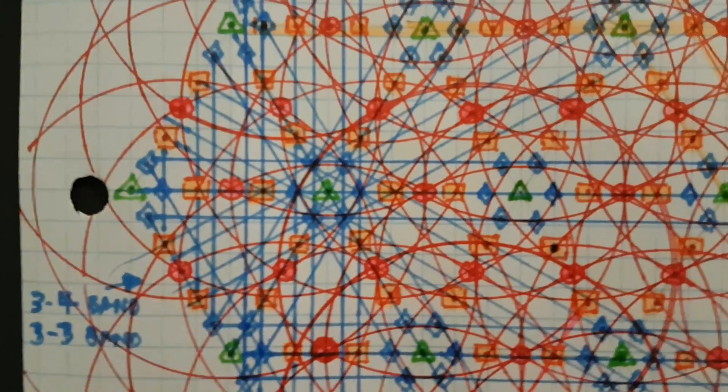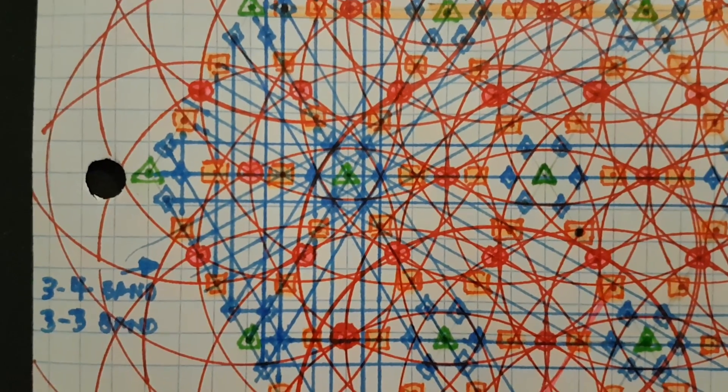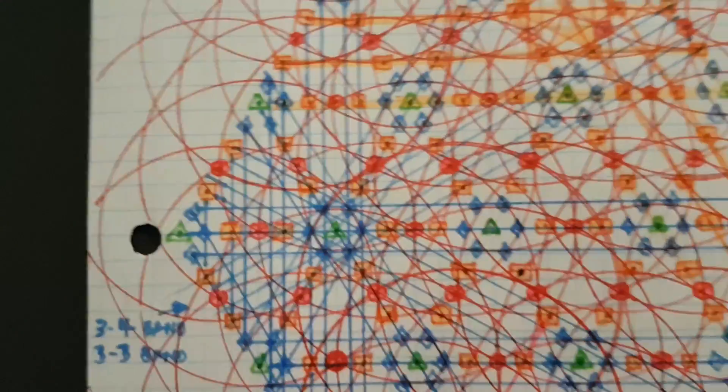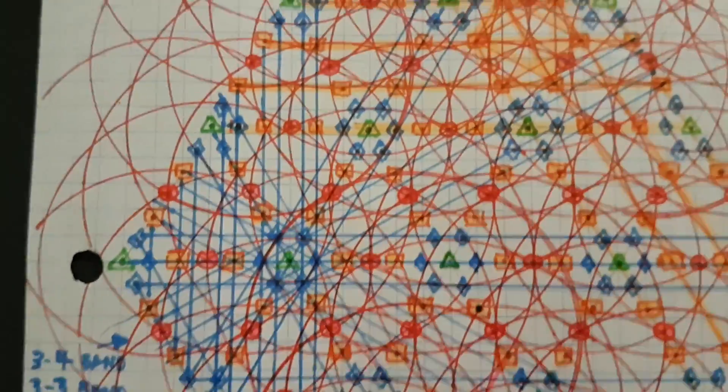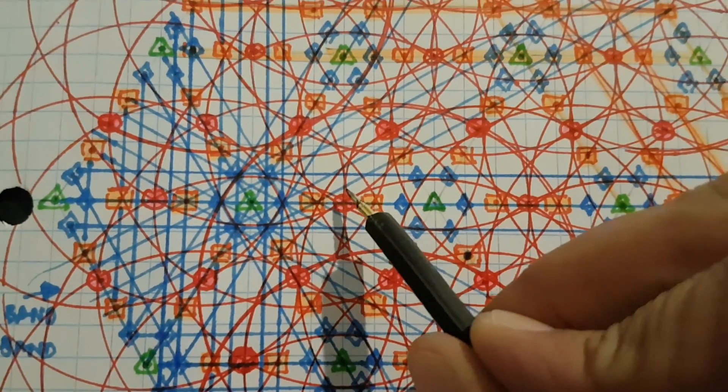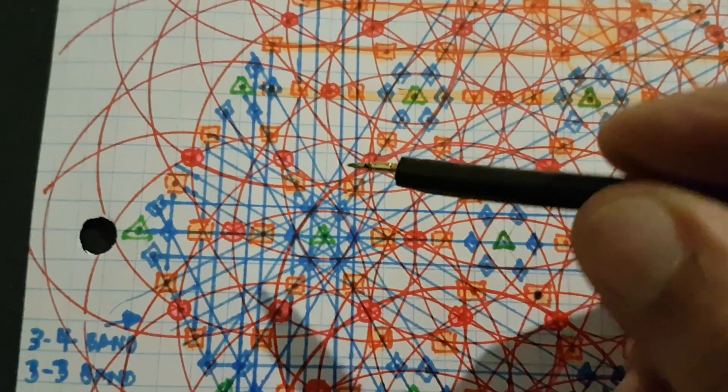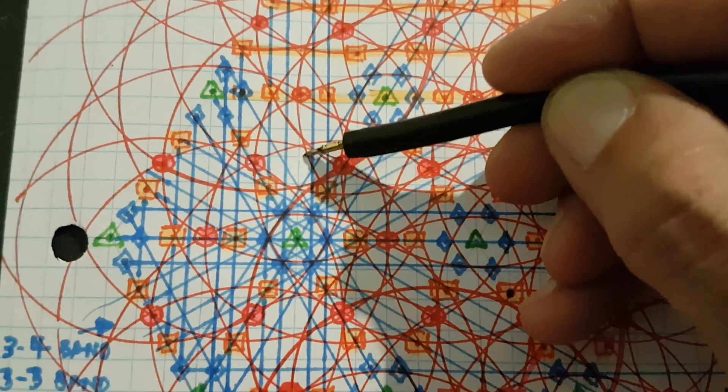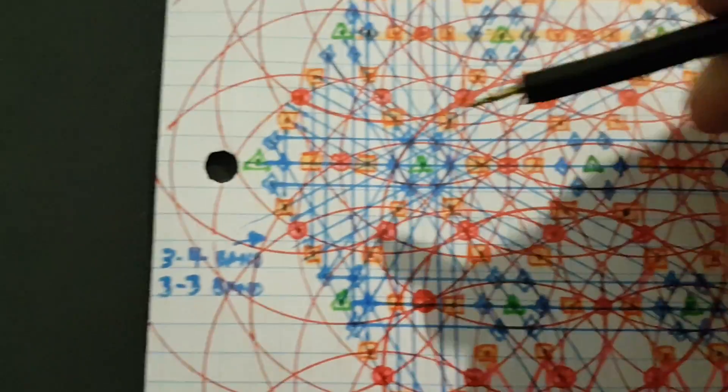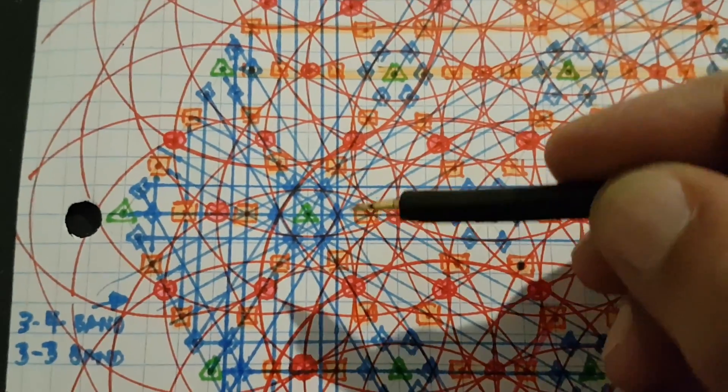I decided to do those just with the lines. You can see one, two, three, four and it's going up and down. One, two, three, four and going on the angle here, one, two, three, four. So there's three sets of the four band.